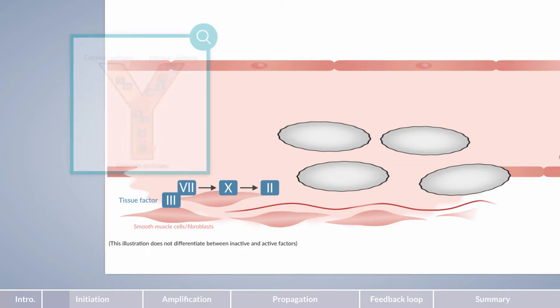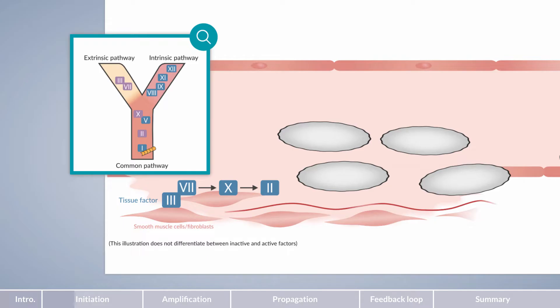So, as a comparison, let's go back to the coagulation cascade. The events described so far are part of the extrinsic pathway. However, in contrast to the cascade model, cell-based coagulation doesn't lead to fibrin cleavage at this stage.